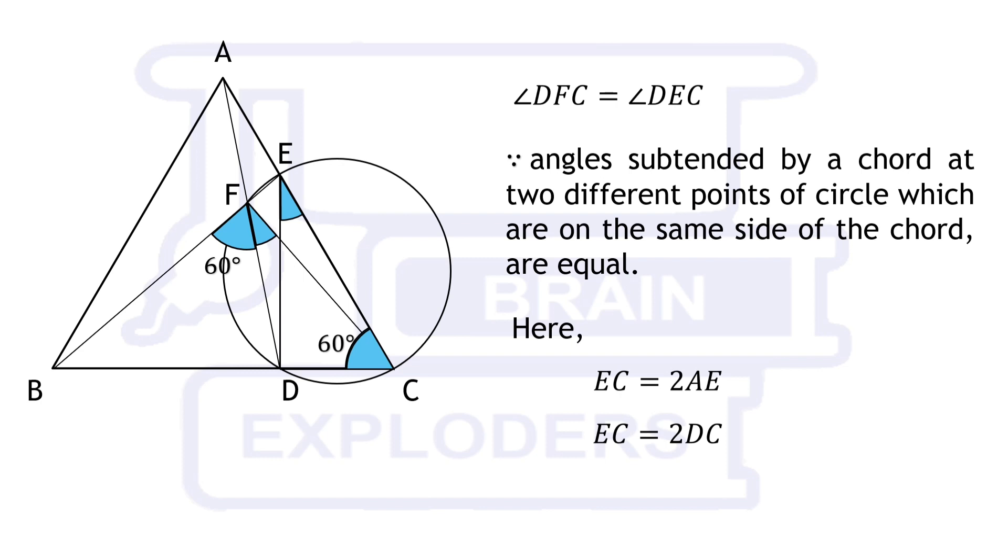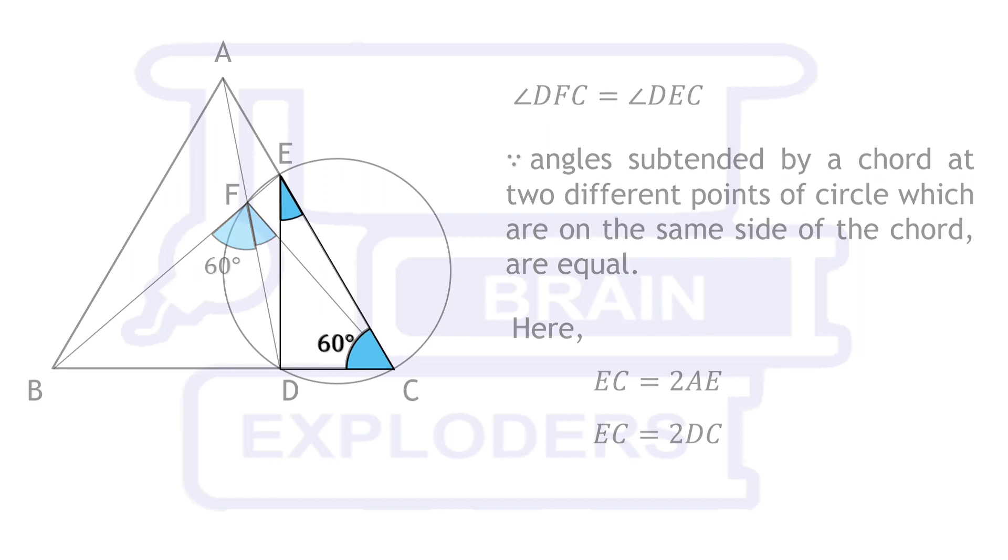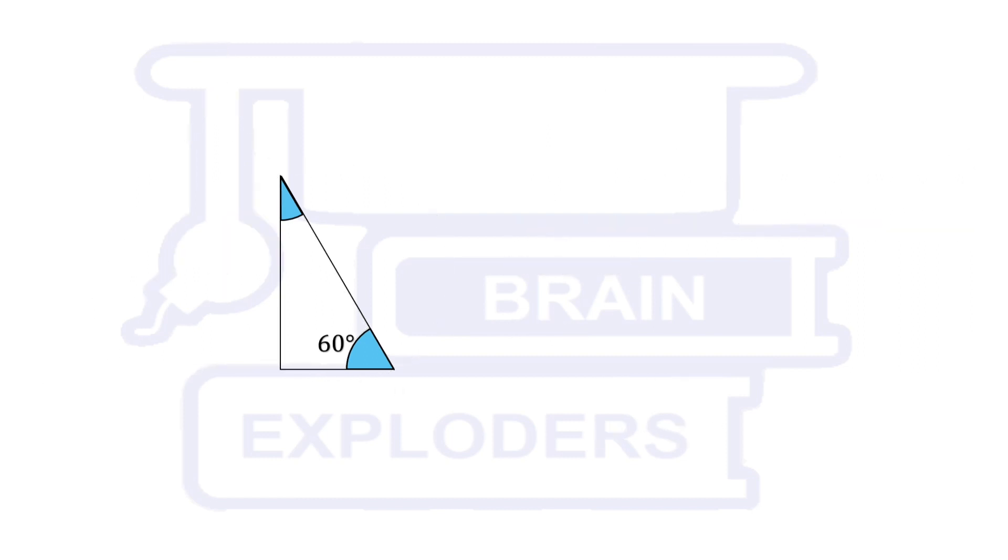We have angle ECD equals 60 degrees. Now here we obtain a triangle in which the ratio of two line segments is 1 to 2 and angle between both of them is 60 degrees.